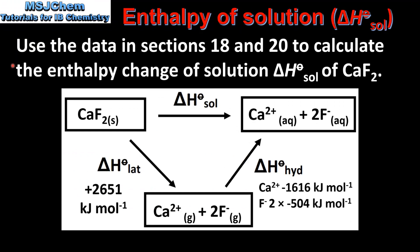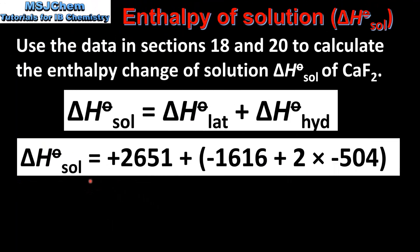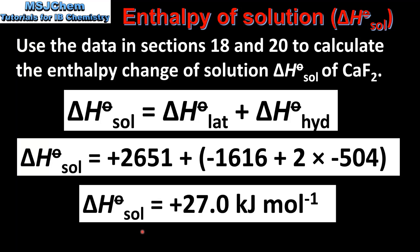Use the data in sections 18 and 20 to calculate the enthalpy change of solution of calcium fluoride. Here we have an energy cycle for the process. The lattice enthalpy of calcium fluoride is positive 2651 kJ/mol. Here we can see the enthalpy of hydration values for the calcium ion and the fluoride ion. Note that we need to multiply the value for the fluoride ion by 2 because there are 2 moles of gaseous fluoride ions that need to be hydrated. Inputting these values into the equation gives us a value for the enthalpy change of solution of positive 27.0 kJ/mol.